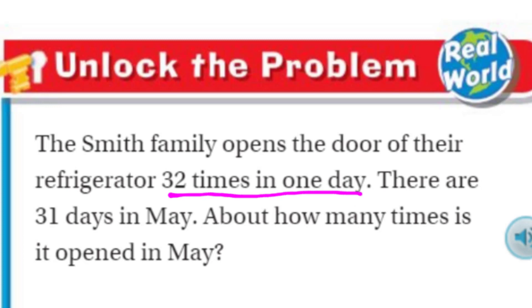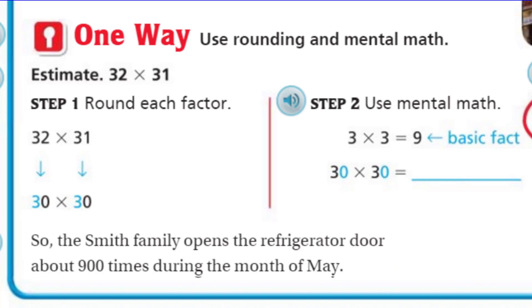Well, here it says the Smith family opens the door of their refrigerator 32 times in one day. That seems really important to me. 32 times in one day. Now it says there are 31 days in May. That would be important to know. About how many times. That about is letting us know that we are going to be estimating.